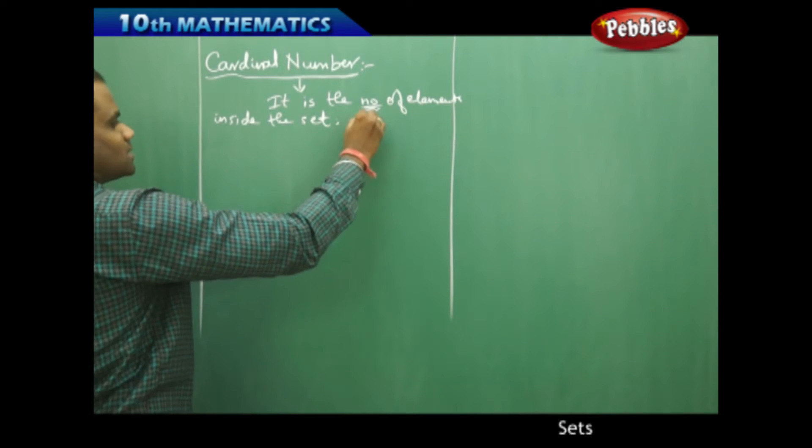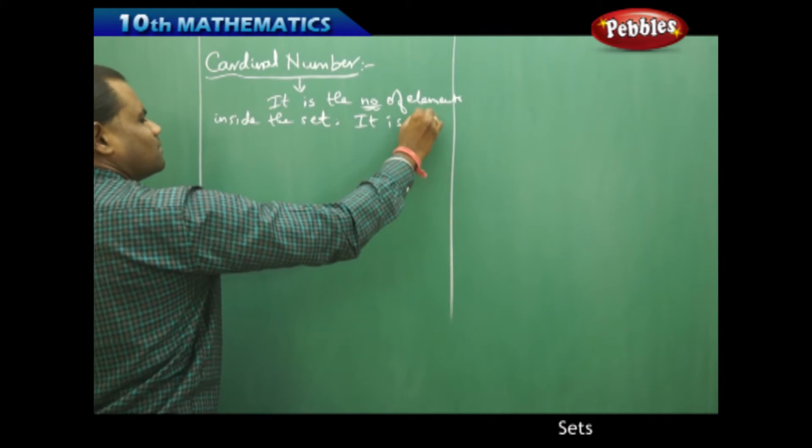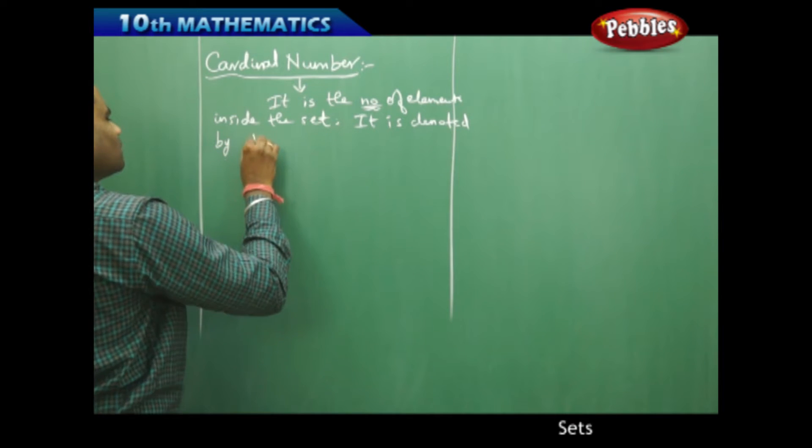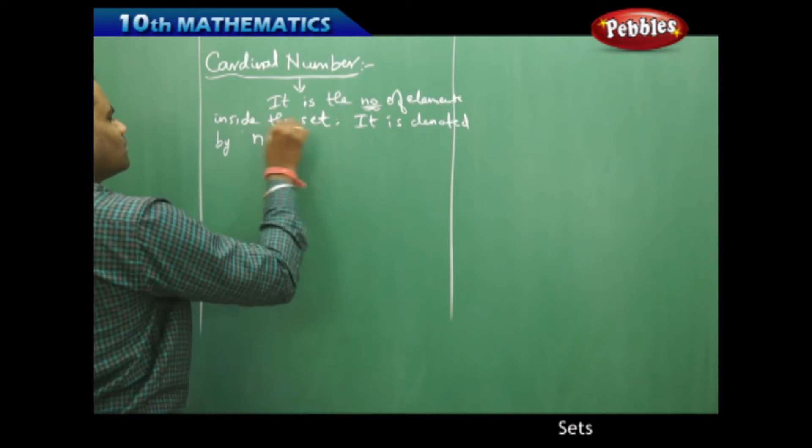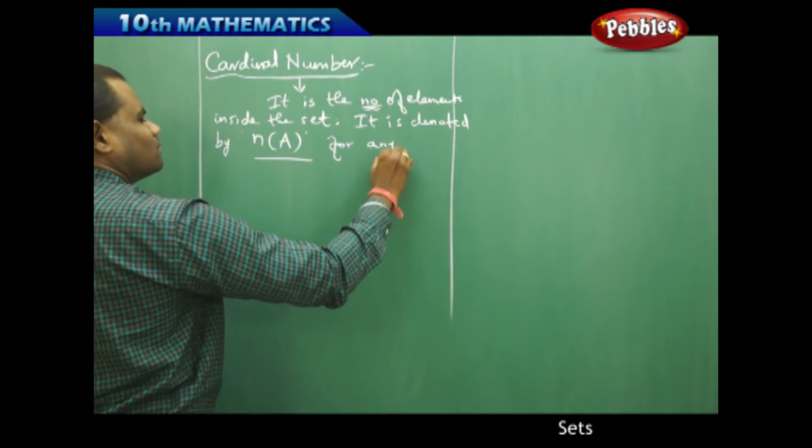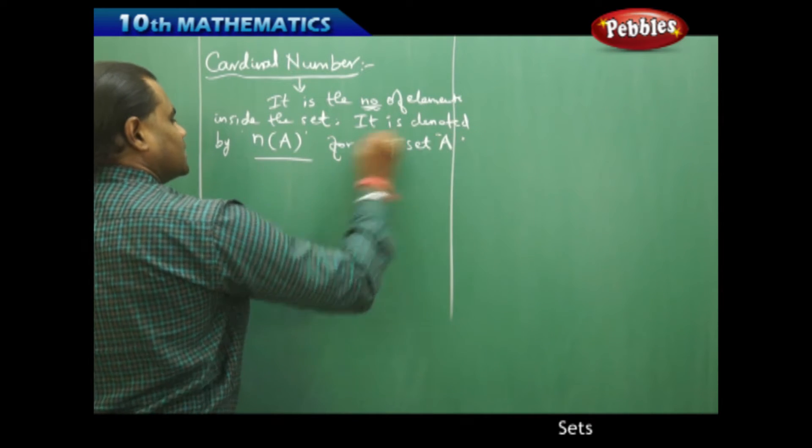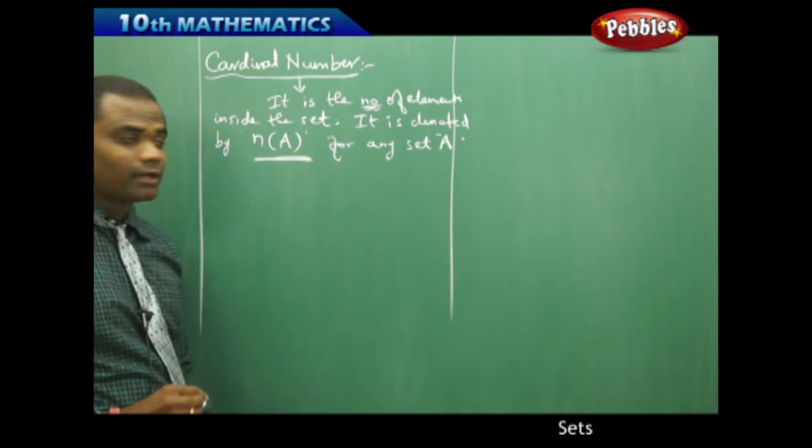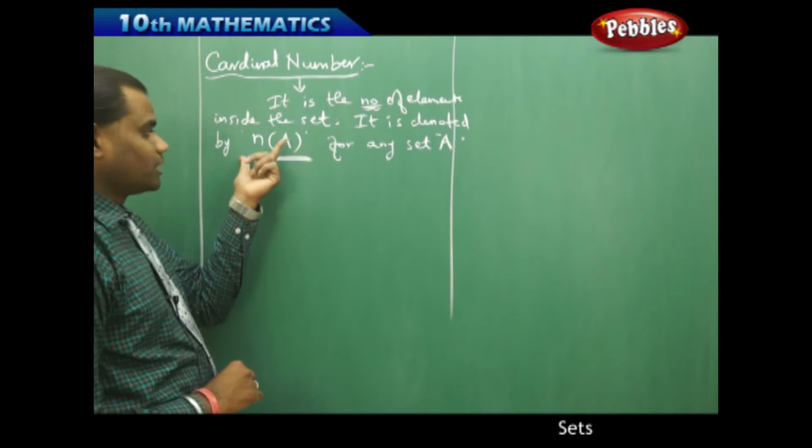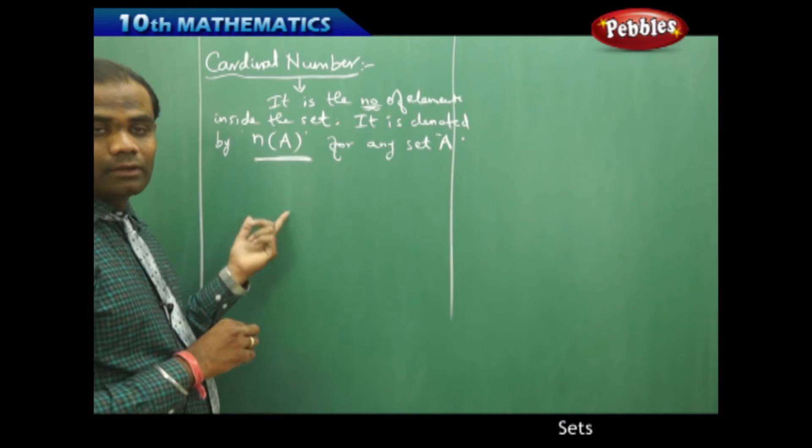For any set A, it is denoted by n(A). The notation for cardinal number is n(A).